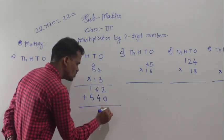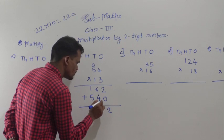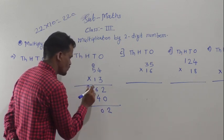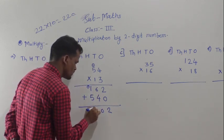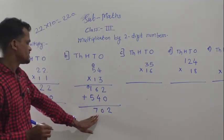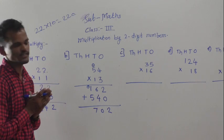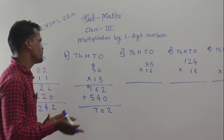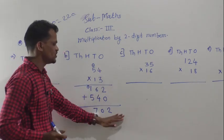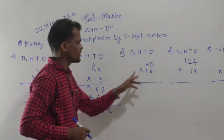Next step: add the 2 numbers. 2 plus 0 is 2, 6 plus 4 is 10 with 1 carry, 1 plus 5 is 6 plus 1 is 7. So 702 is the answer — if you multiply 54 by 13, you will get 702 as the product.